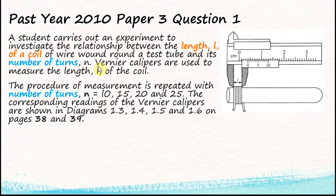The student investigates the relationship between the length of the coil and the number of turns — these are the two variables given. One must be the manipulated variable and the other the responding variable. The second part of the question states that the procedure is repeated with number of turns N equal to 10, 15, 20, and 25. The manipulated variable is controlled by the experimenter, so the students change the number of turns — this is the manipulated variable.